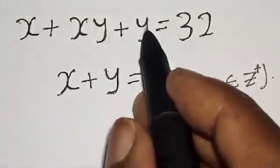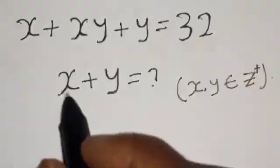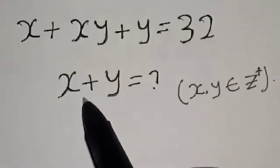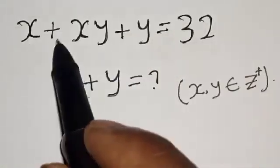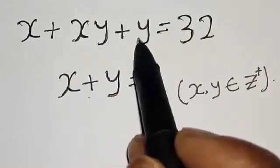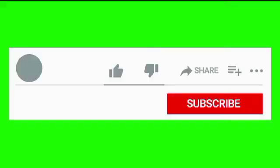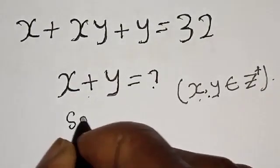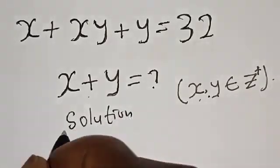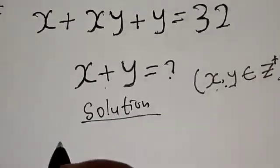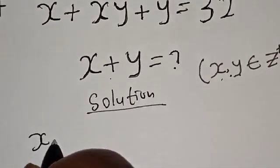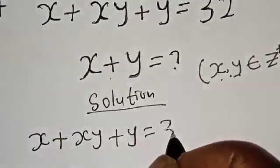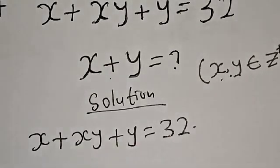If x plus xy plus y is equal to 32, what is the value of x plus y? Hi everyone, welcome to my class. In this class we want to find the value of x plus y from the given equation x plus xy plus y equal to 32. Please don't forget to like, share, comment and subscribe. Solution: we have the given equation x plus xy plus y equal to 32.